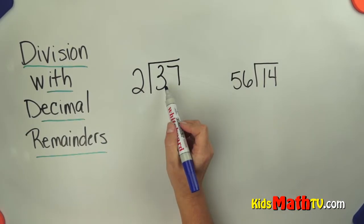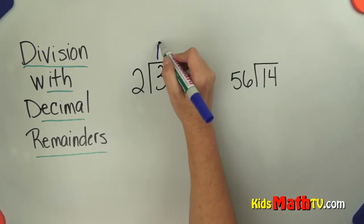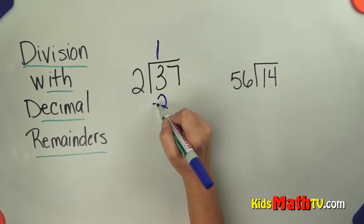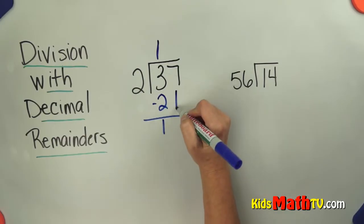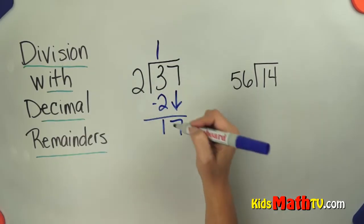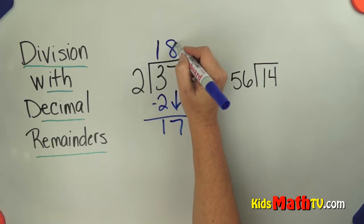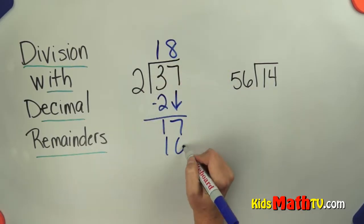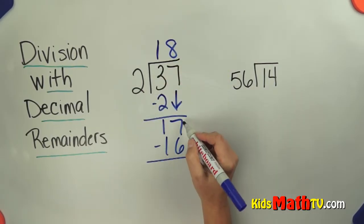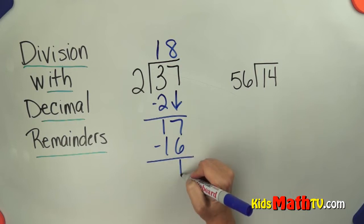How many 2's are in 3? There are 1. 1 times 2 is 2. Subtract and I get 1, and bring down a 7. How many 2's in 17? There are 8. 8 times 2 is 16. I subtract and I get 1.